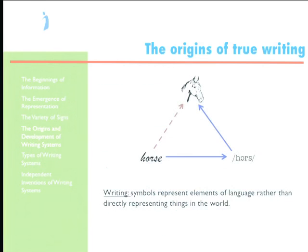The basic idea is this: rather than having signs that directly represent things in the world, we'll have signs that represent the items in our language that represent things in the world — and by representing those items, the words and phonemes, we'll be able to refer to the world indirectly via language. So rather than having a symbol directly for a horse, we'll represent the English word 'horse' and thereby refer to a horse in that way.